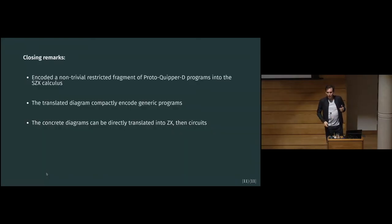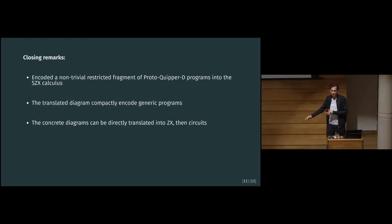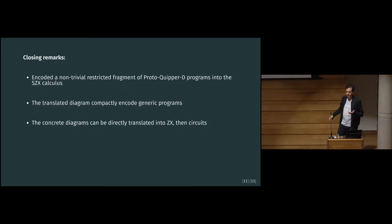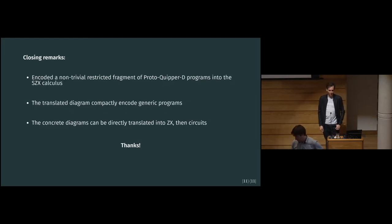With this, we have defined a translation from a fragment of Proto-Quipper-D into the SZX calculus. The idea is that now we can take this expression in SZX calculus and translate it directly into ZX or a quantum circuit. But the idea is maybe we can profit from this compact representation to do some rewriting in the middle. Some ideas for future work include characterizing what the full universe of functions we can encode in SZX is, and actually defining some optimization procedure when working there.